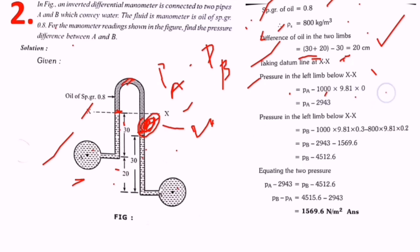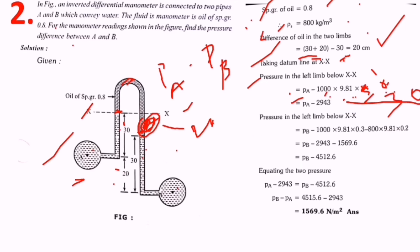Pressure in the left limb below the XX datum line equals pa minus rho times g times h, where rho is 1000 (water), g is 9.81, and h is 0.30 meters. This gives: pa minus 1000 times 9.81 times 0.30, which equals pa minus 2943. This is equation one.